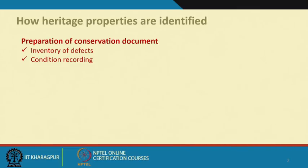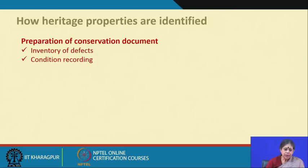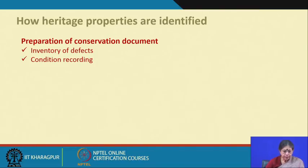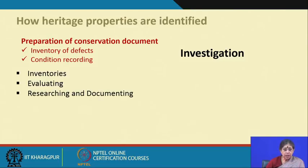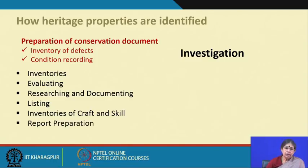When we talk about documenting a heritage property, it is actually about how the properties are identified. This requires preparation of a conservation document. The two very important aspects of that preparation are the inventory of the defects and the condition recording. Broadly, the various parts of preparing a conservation document are: inventories, evaluating, researching and documenting, listing and inventories of craft and skill, and report preparation.